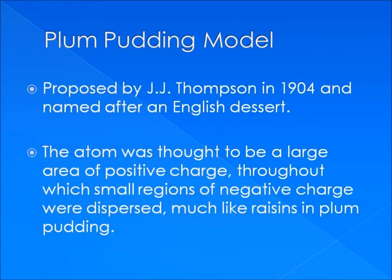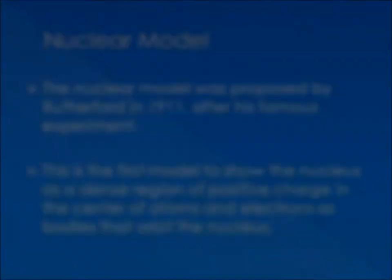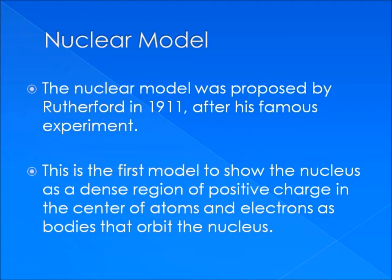Dalton's model was accepted for more than 100 years until in 1904, when physicist J.J. Thompson proposed his own model of the atom, known as the plum pudding model, named after the fancy dessert dish in his home country, England. The plum pudding model theorized that atoms were large areas of positive charge with negative charges spread throughout them in small clusters, much like small clusters of raisins in plum pudding. It wasn't until seven more years had passed that in 1911, Rutherford, after his famous experiments, proposed the nuclear model. The keystone of the nuclear model is that there is a dense, positively charged nucleus at the center of every atom and that electrons orbit around this nucleus. This was the shortest-lived atomic model since it couldn't account for why the electrons orbited the nucleus or whether they did so at different distances.